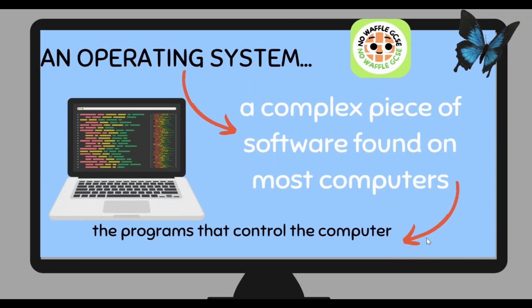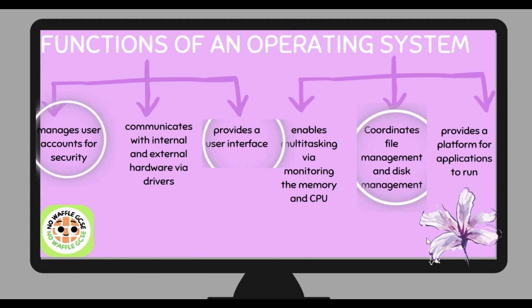So what is an operating system? An operating system is a complex piece of software that is found on most computers. It's the program that controls the entire computer. The operating system manages user accounts for security, communicates with internal and external hardware via device drivers, provides a user interface, enables multitasking via monitoring the memory and CPU, coordinates file management and disk management, and provides a platform for different applications to run.